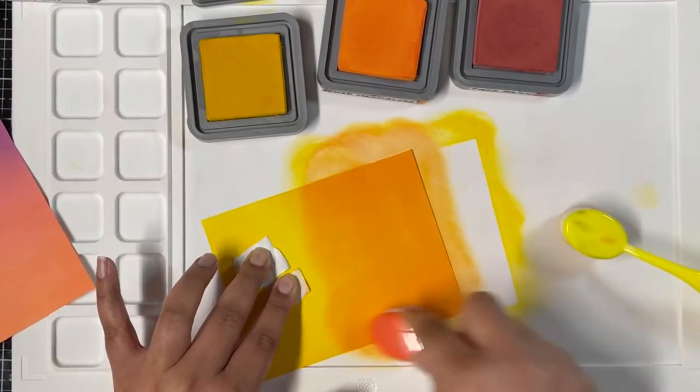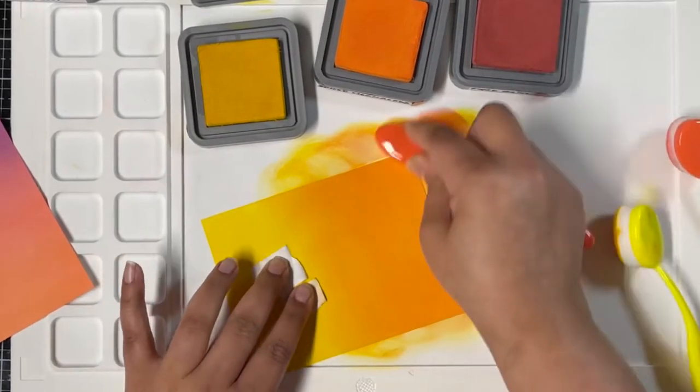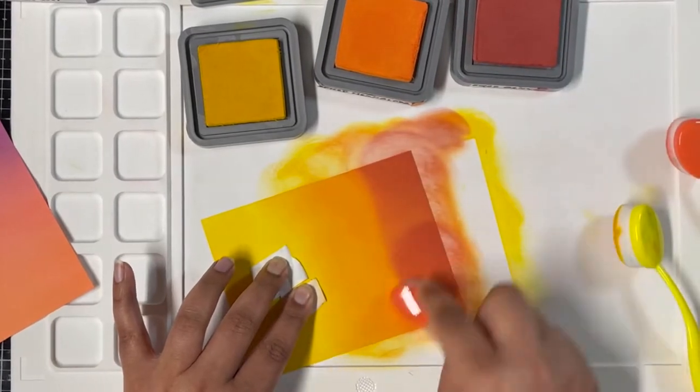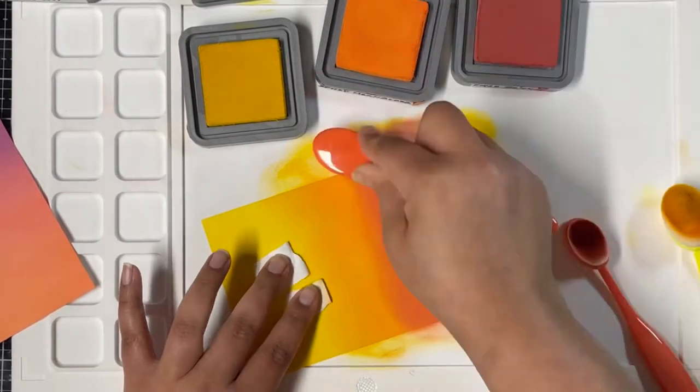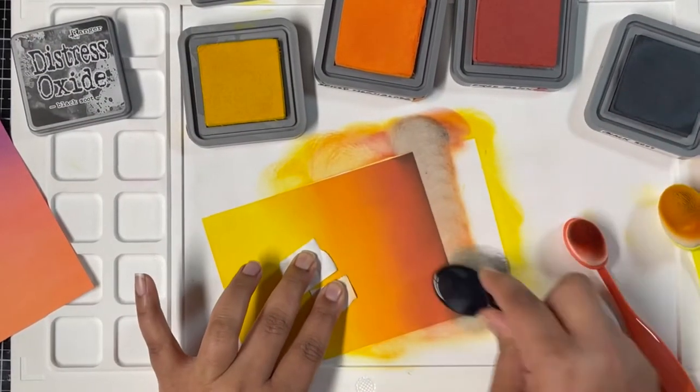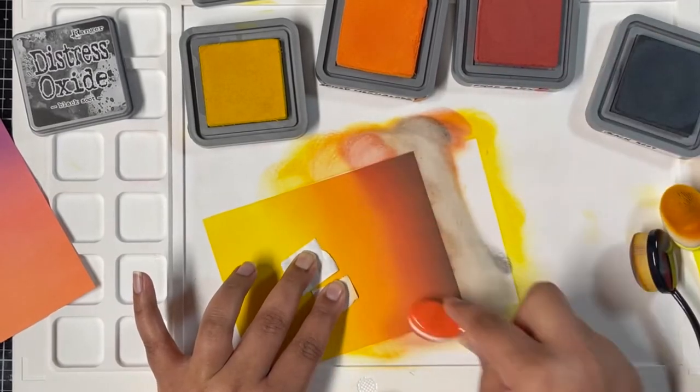I'm blending Dried Marigold into the Mustard Seed, then I'll bring in the Fired Brick color, which brings that nice dark red to the background. Next, to make the colors a little darker toward the edges, I'll bring in Black Soot and blend that with Fired Brick.